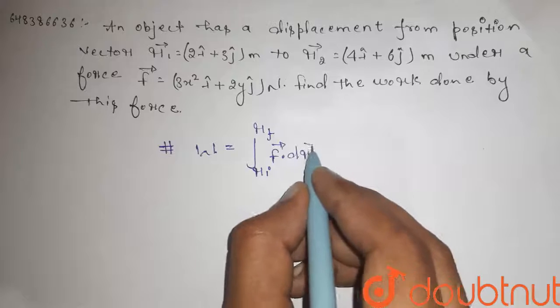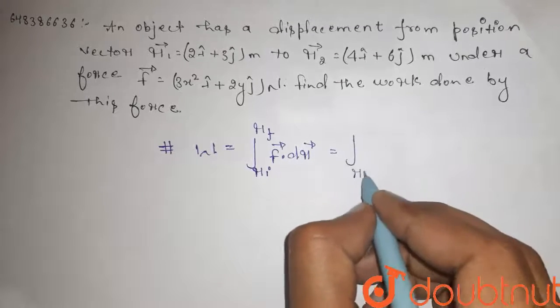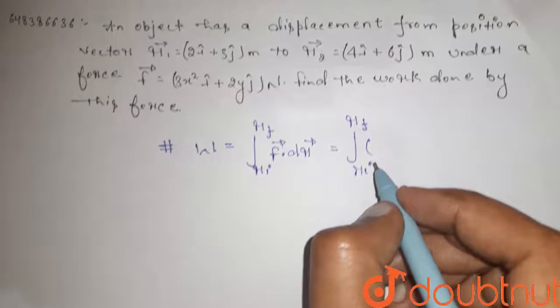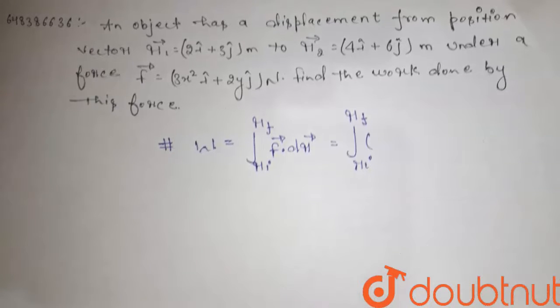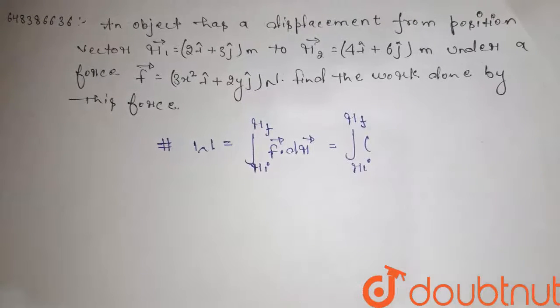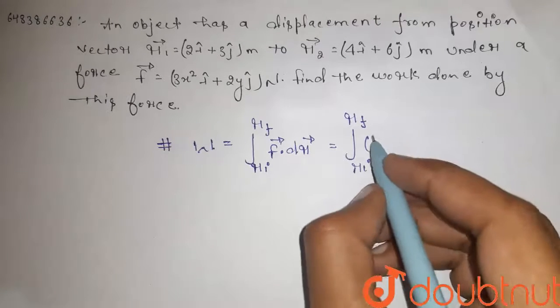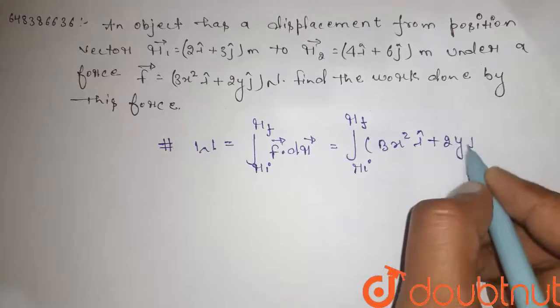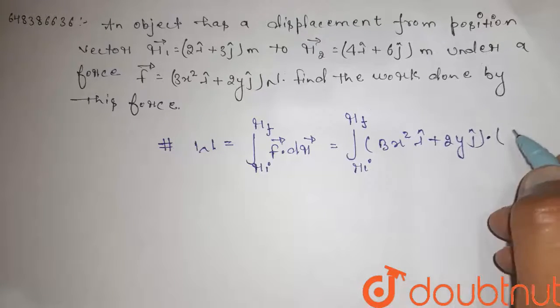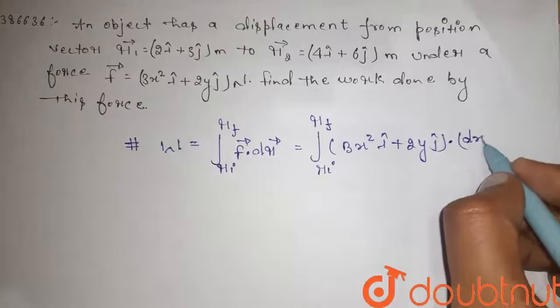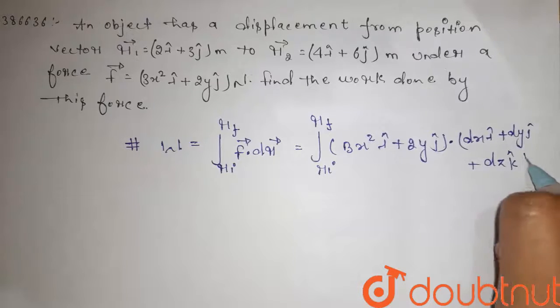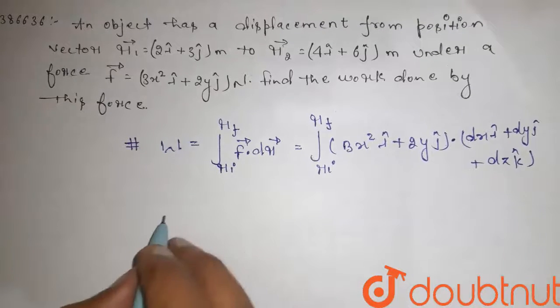W equals the integral F dot dr from r_initial to r_final. The force is 3x² i cap plus 2yj cap, dot dr which is dx i cap plus dy j cap plus dz k cap. So the work done...